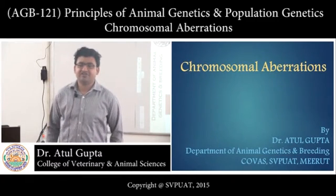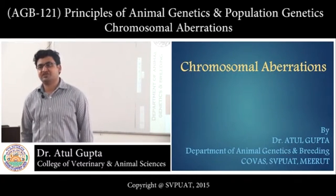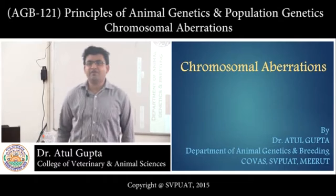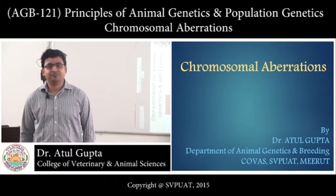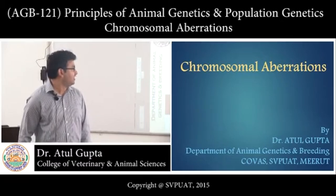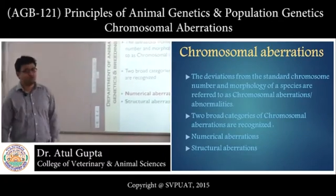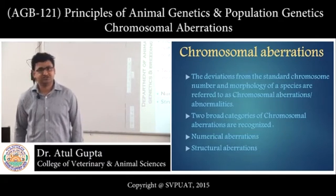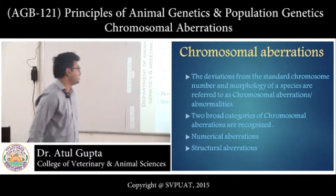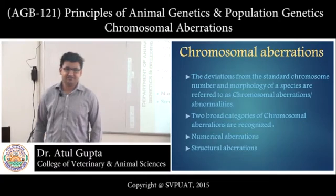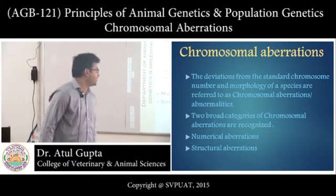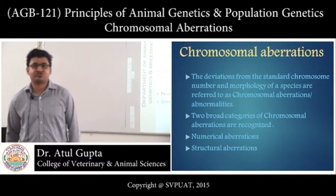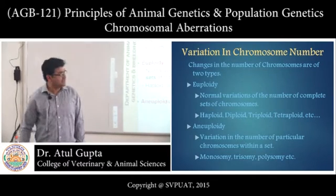Good morning dear students. Till now we have studied about chromosomal structures and their number in various species. Today we will learn about abnormalities in chromosome structure and number, called chromosomal aberrations. The deviations from the standard chromosome number and morphology of a species are referred to as chromosomal aberrations or abnormalities. Two broad categories are recognized: numerical aberrations and structural aberrations.